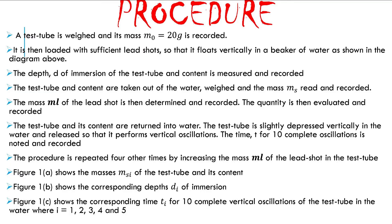Once this is done, return the test tube and its contents into the water. We want to find the time it will take the test tube and its contents to complete 10 oscillations. Dip it into the water, depress it vertically and release so that it performs vertical oscillations. Record the time for 10 complete oscillations. We now have the mass of the lead shots, the depth of immersion, and the time for 10 oscillations noted.